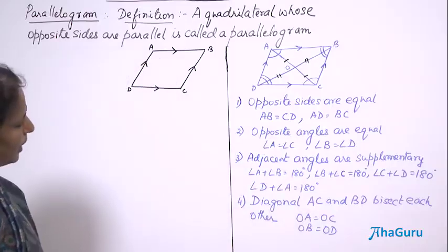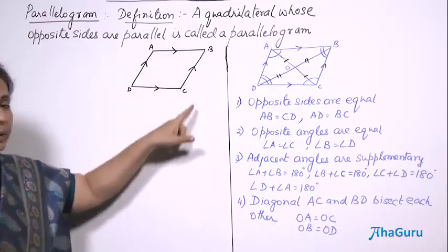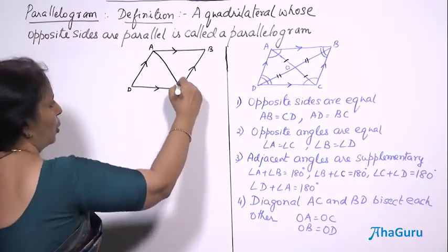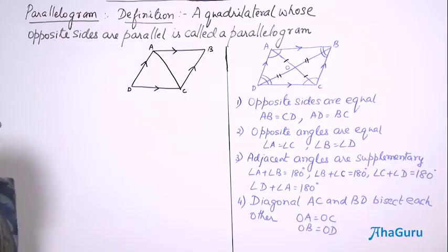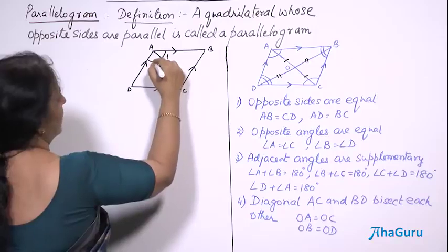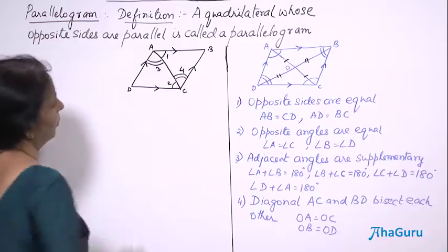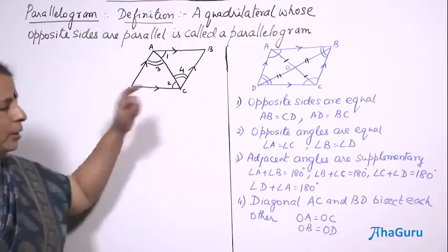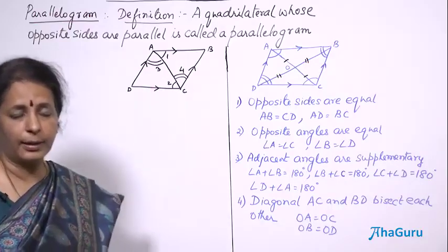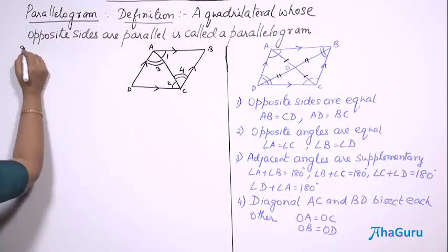Now, one by one I am going to prove all four properties. We will start with the first one: opposite sides are equal. I have to prove that AB is equal to CD, and also BC is equal to AD. For that, I am going to join AC, which is the diagonal. I will mark certain angles — say this is angle 1, this is angle 2, this angle is 3, and this angle is 4.